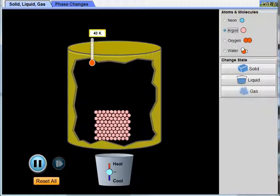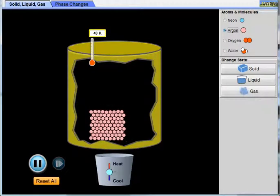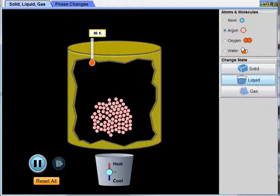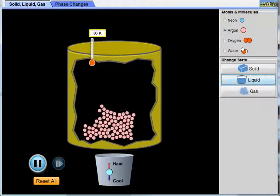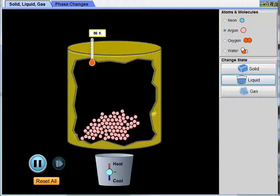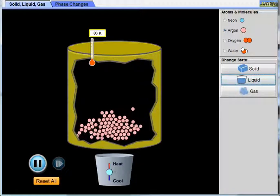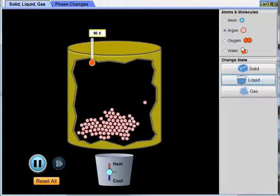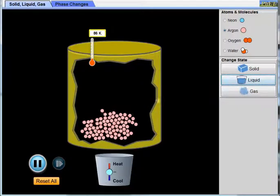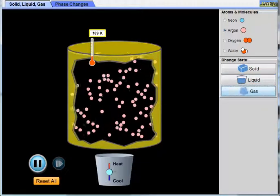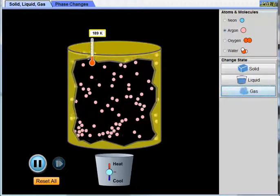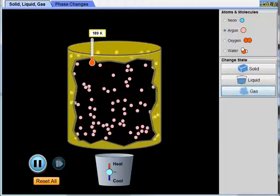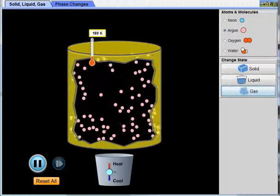Once again, argon in the solid phase, typical solid, definite shape, definite volume. In the liquid phase, now the particles are moving more and they're sliding slowly over each other. So liquids do have a definite volume, but they don't have a definite shape. And in the gas phase, now the particles are spread out throughout the container, so gases don't have a definite shape nor do they have a definite volume.